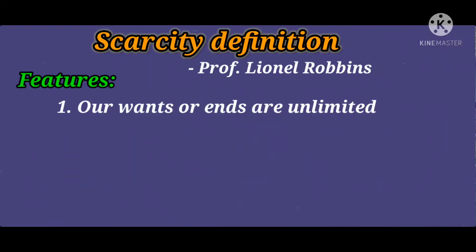The want of a particular individual is unlimited, and the want of a country and nation is also the same — unlimited — whether the country is developed or underdeveloped. This multiplicity of wants leads to the problem of choice. The second feature is scarce resources. Resources are limited while wants are unlimited. If resources were unlimited, then no economic problem would arise.